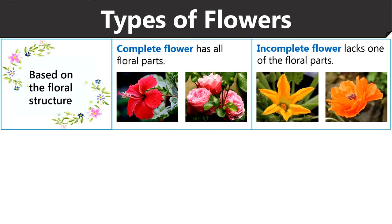A complete flower contains all the four components of a flower, and its examples include hibiscus flowers and roses. Then an incomplete flower does not contain all the floral components, or we can say it lacks one of the floral parts. Its examples include pumpkin flowers and corn poppy flowers.